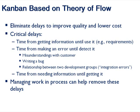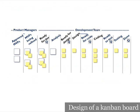Kanban is based on this theory of flow — the idea of eliminating delays to improve quality and lower cost. Critical delays include: time from getting information — in a waterfall environment, if everything is planned up front and worked on at once, you have really big batches. If it takes a year from getting information until you use it, that information degrades. If I'm working on five projects at once and testing is delayed, I'll take longer to tell the developer about an error. So we want to manage work in progress to help remove these delays.